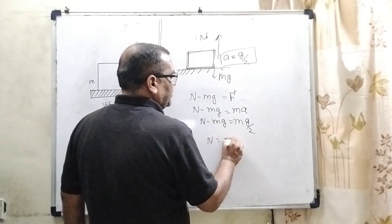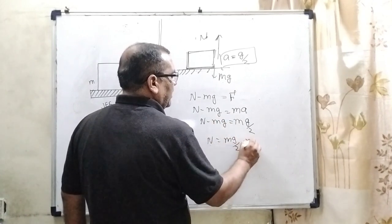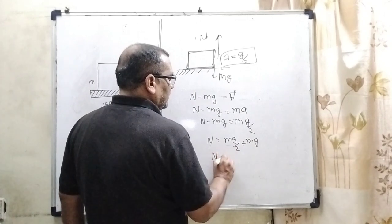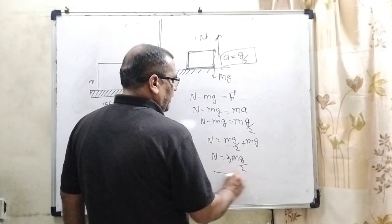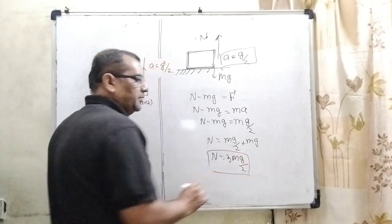Then N equals mg/2 plus mg. Then we get 3mg/2. So here we get the normal force.